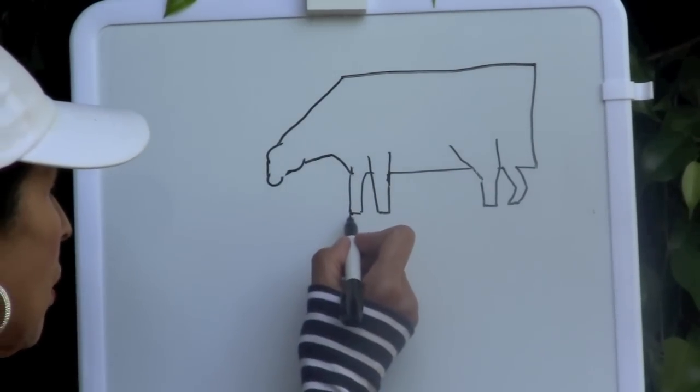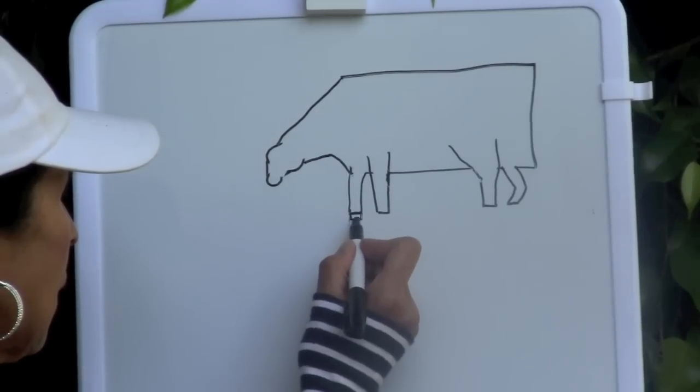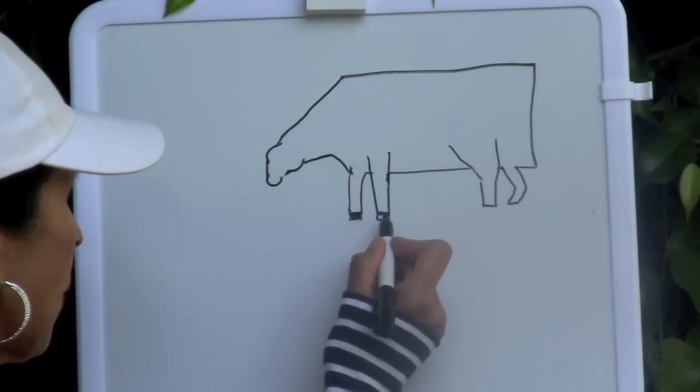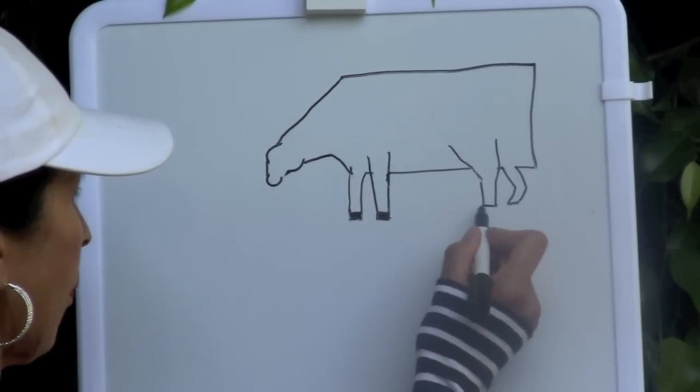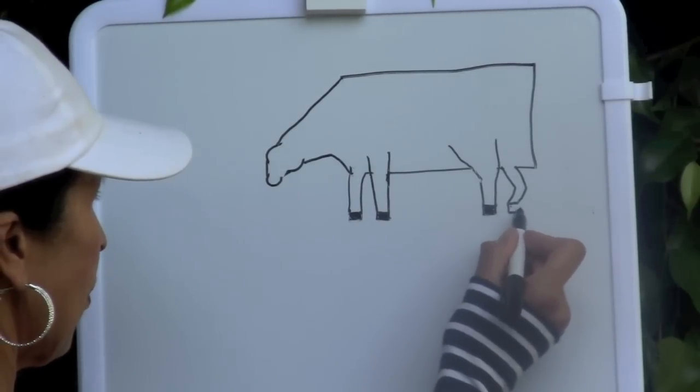Now at the bottom of the legs we are going to draw squares. Remember, the square has four equal sides, and the squares are going to represent the cow's hooves. That one, the third one, third square, and the fourth square.